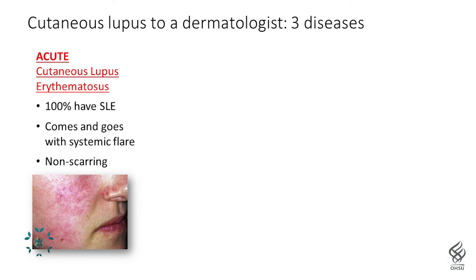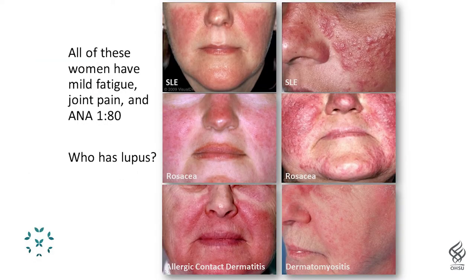Starting with acute cutaneous lupus: 100% of these patients have systemic lupus manifestations. The classic way to think about it is the butterfly rash, which is very famous in lupus. It comes and goes with flares — if people's butterfly rash is flaring, generally they feel terrible overall and everything is flaring together. It's a tricky rash; the malar rash of lupus tends to be a little bit nonspecific, so just by looking at photos, you can't always tell who has lupus.